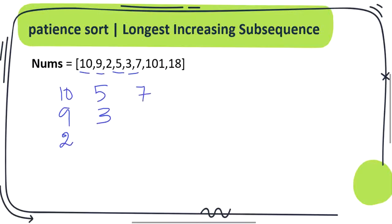And 101. 101 cannot be placed on any of the pile we have created, so create a new pile and place it on it. Now finally 18 we cannot place it on pile 1, 2 and 3, so finally we have to place it on the last pile.